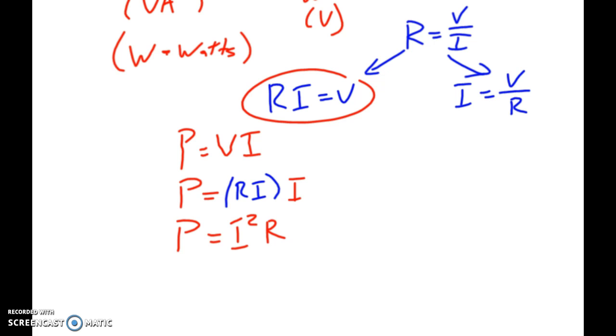The same thing can be true over here. So if we use the equation power is equal to voltage times current, we can say power is equal to voltage times all this stuff right here. And when we plug that into our equation, we can see that power is equal to voltage squared divided by R. So what we have here is we have three different equations that we can use that all involve power.